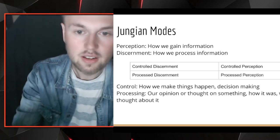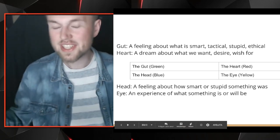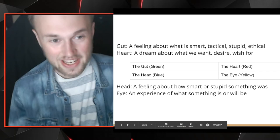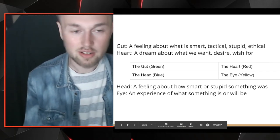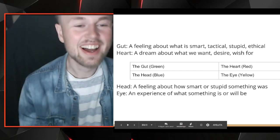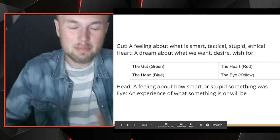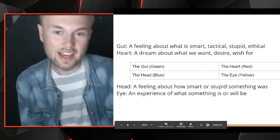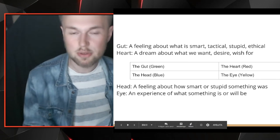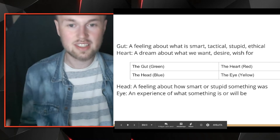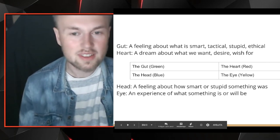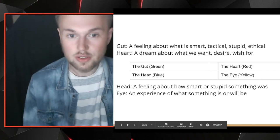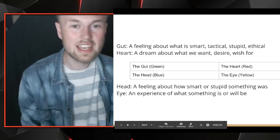Looking at what this comes down to: red types typically say they want to follow their heart — that's a classic red quote. The green type says go with your gut, go with what you feel is right or wrong. The green type sees and uses the gut to make decisions, where the blue type imagines themselves using the head. The gut is a feeling about what is smart, tactical, stupid, or radical, where the heart is a dream about what we want, desire, and wish for.